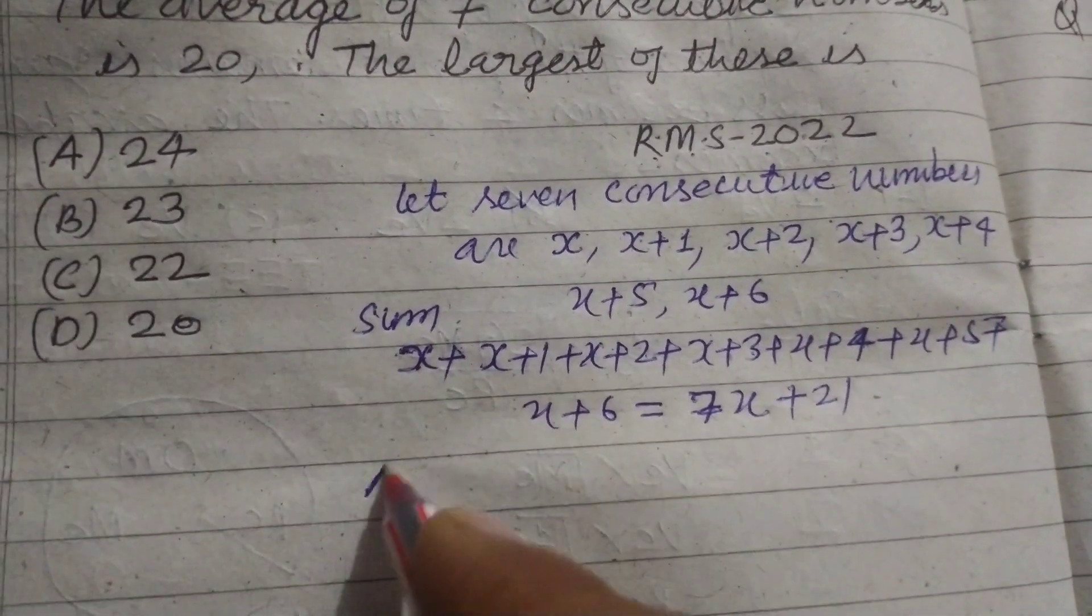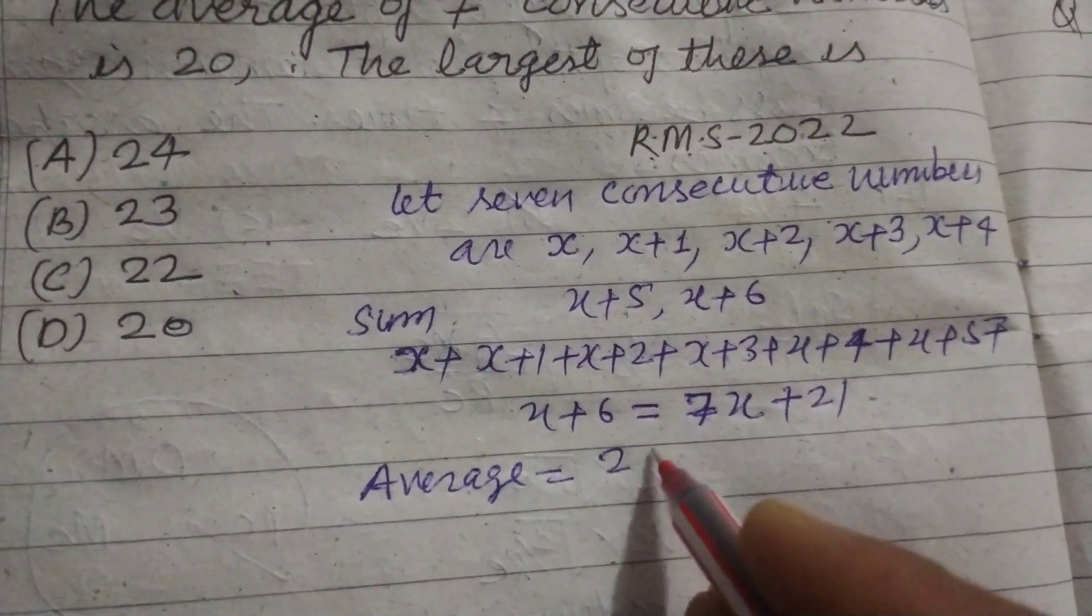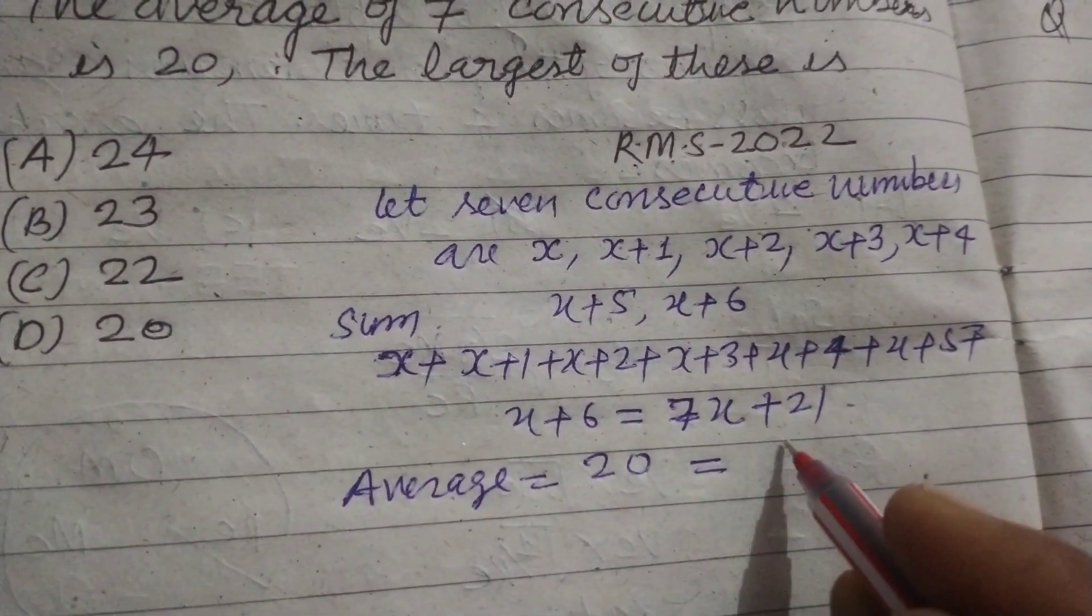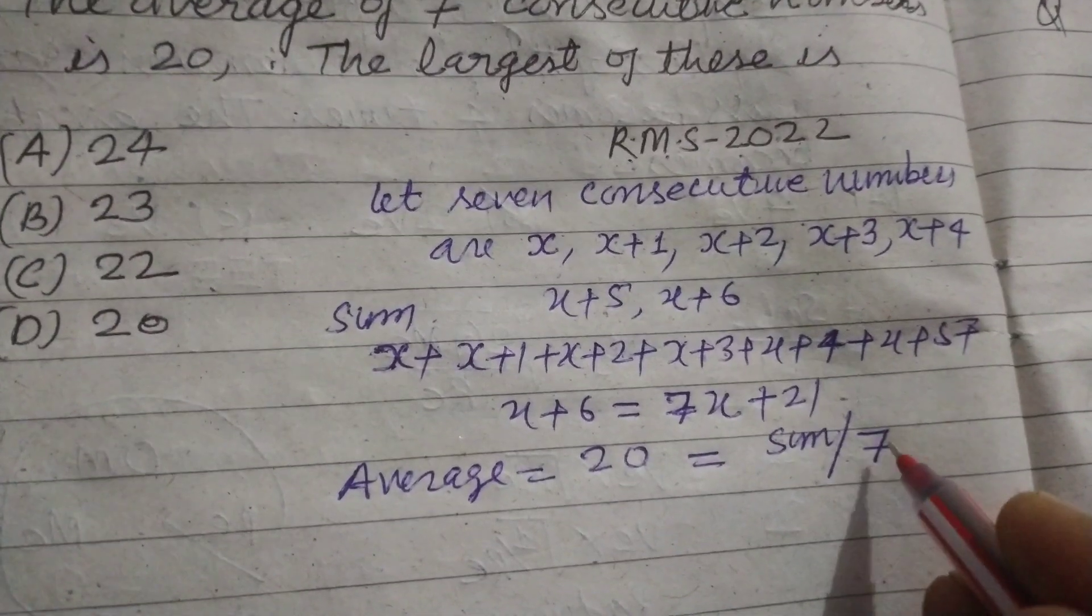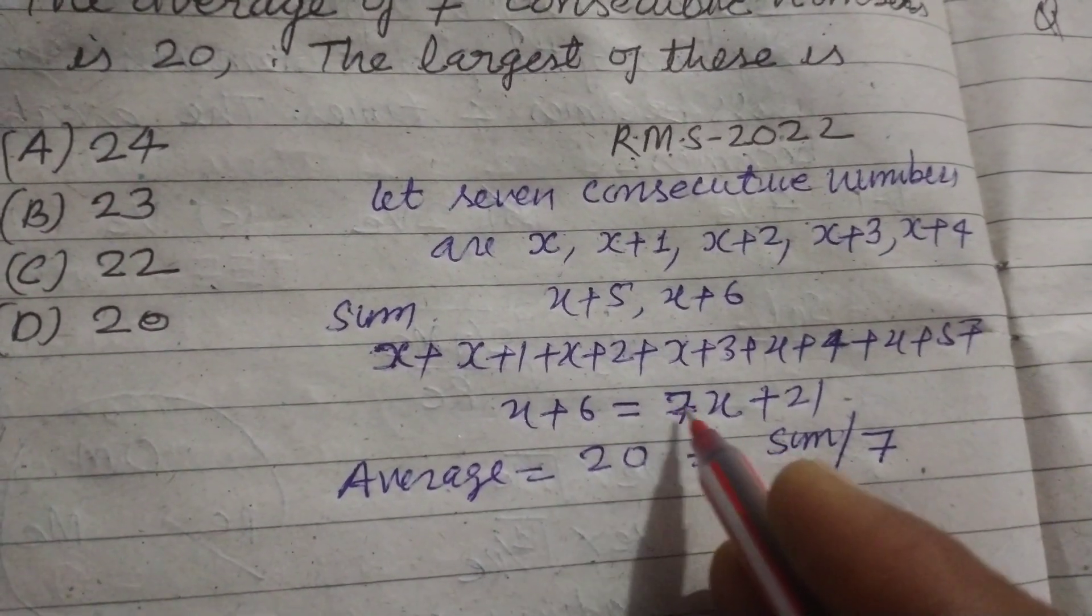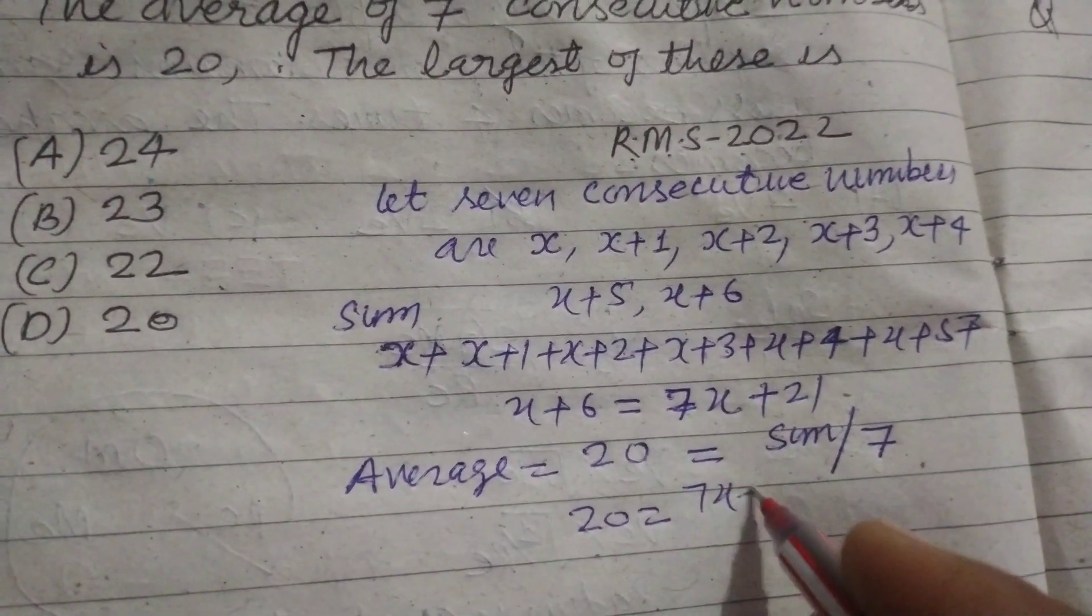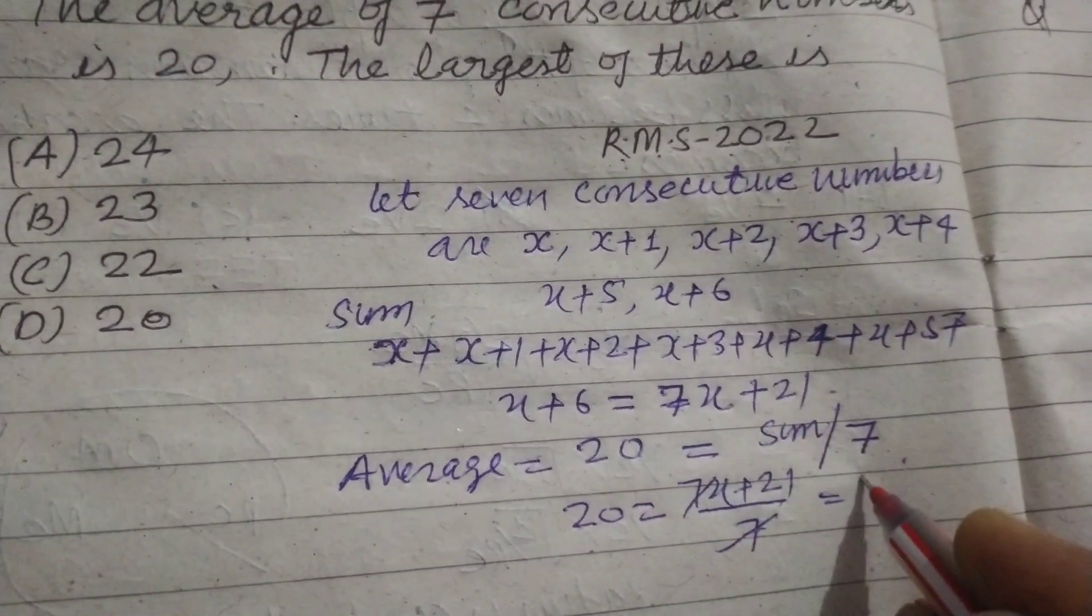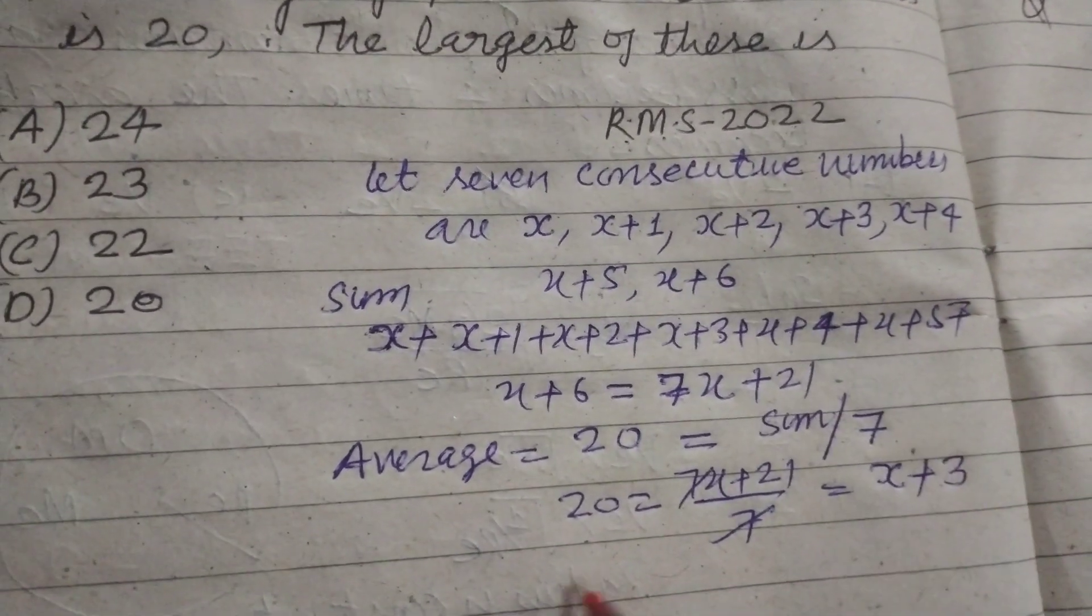The average given to us is 20, and average equals sum divided by number of numbers. The number of numbers is 7, so we have 20 = (7x + 21) / 7. We divide by 7, so 20 = x + 3.